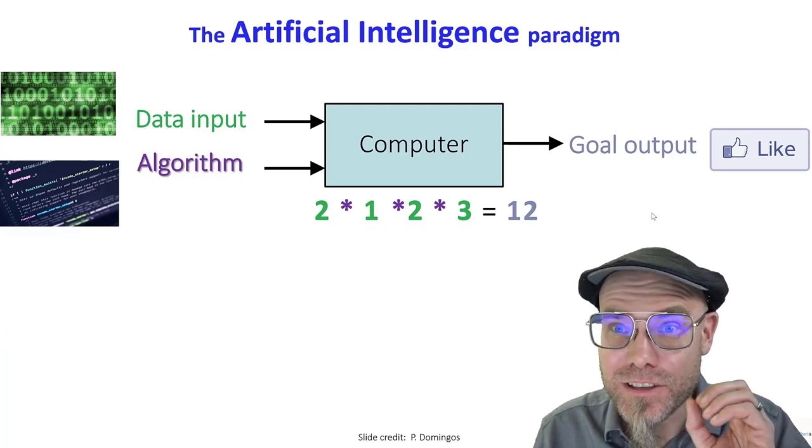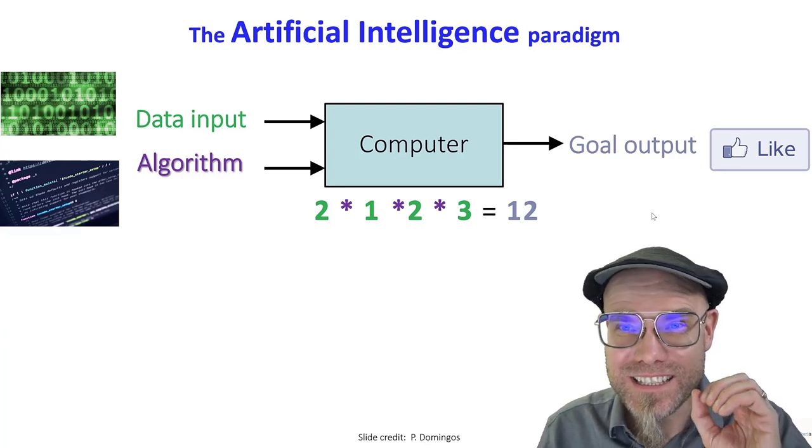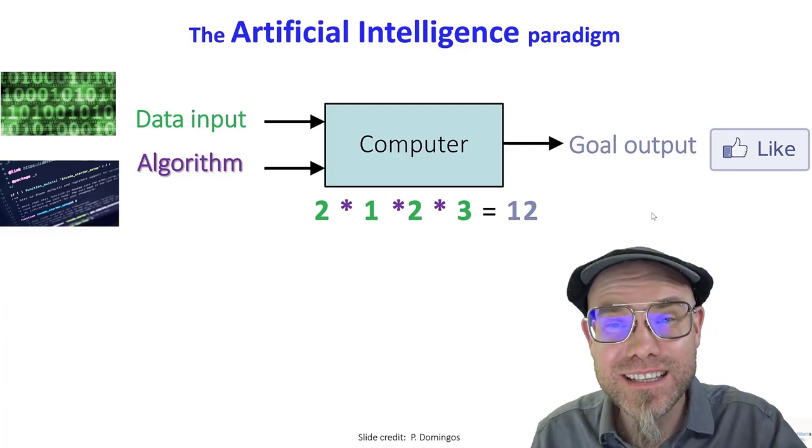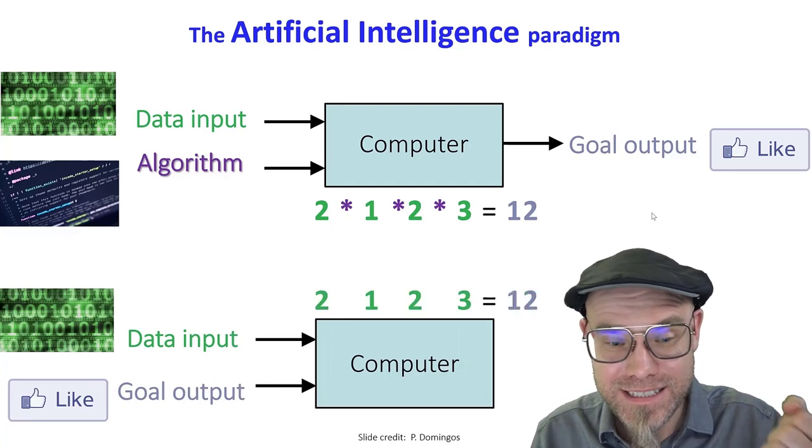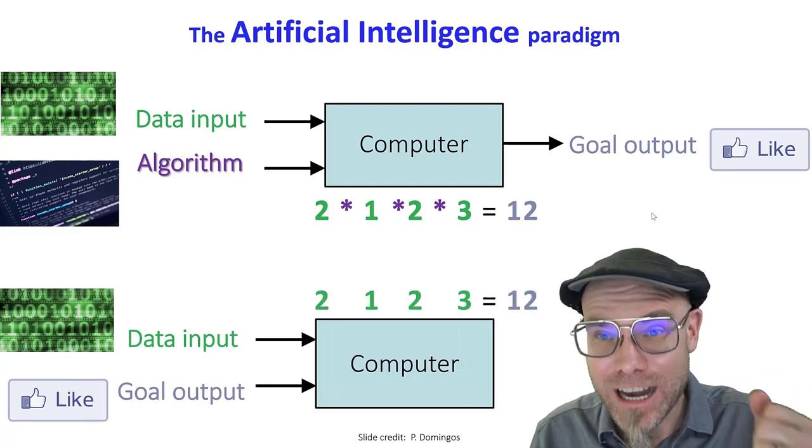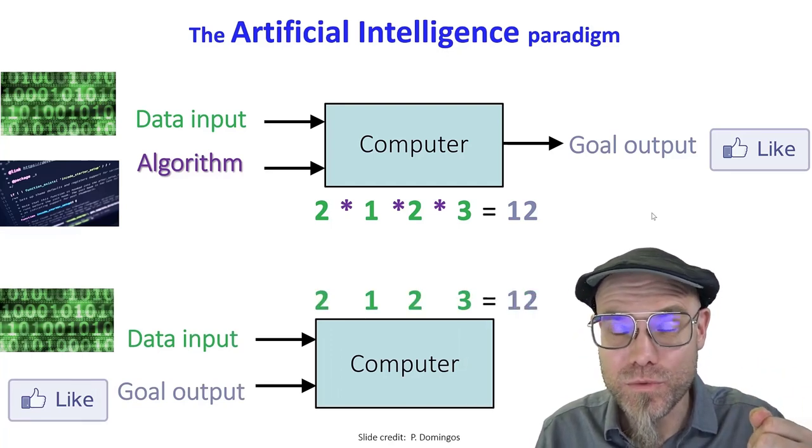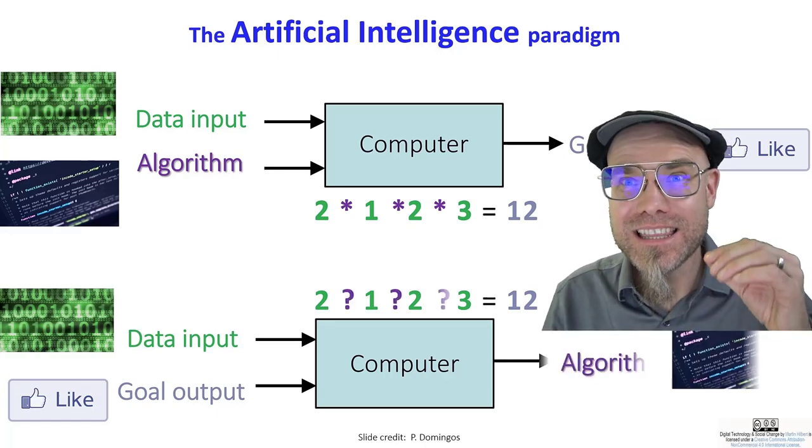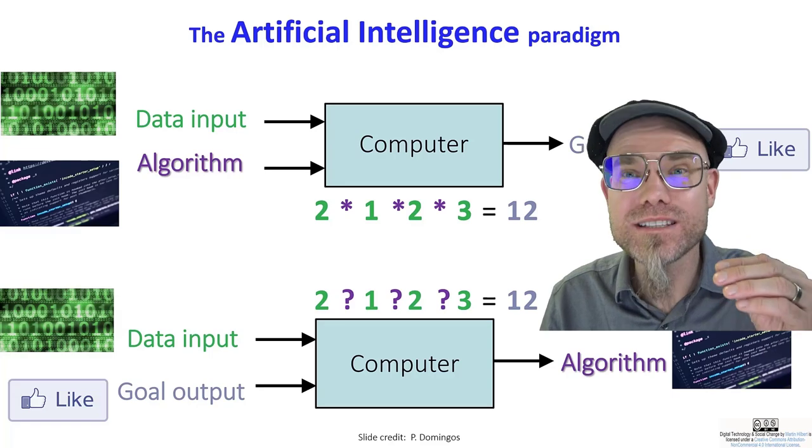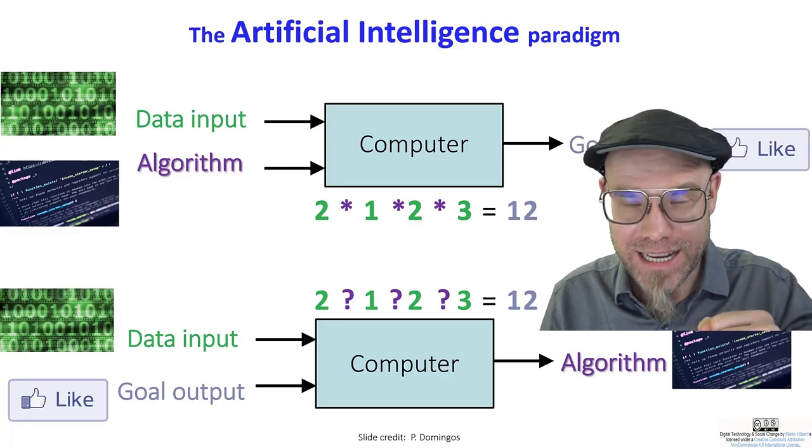Now we said the machine learning revolution is so powerful because it turned this entire knowledge framework on its head. The input is data and the output. So you observe something about the world and you give the machine where you want to go. And then the machine figures out what's the best way of getting there.